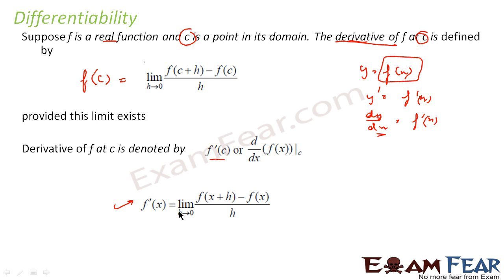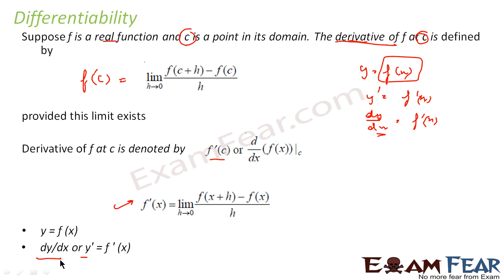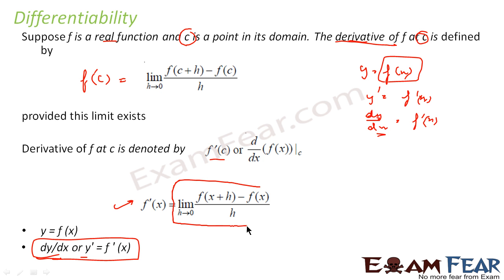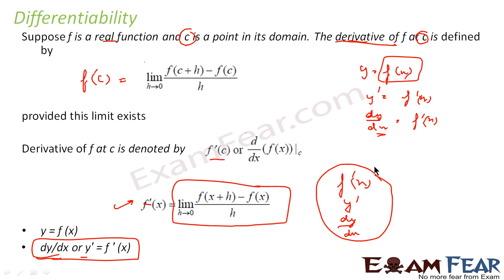f'(c) is nothing but the limit of [f(x+h) minus f(x)] divided by h, as h tends to 0, provided the limit exists. So if y equals f(x), then dy/dx or y' equals f'(x) — all are the same. This is just a way to represent, but the actual value is f(x+h) minus f(x) divided by h. You can represent it as f'(x), y', or dy/dx — all three mean the same.